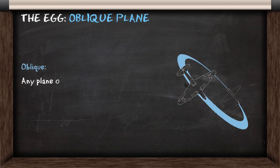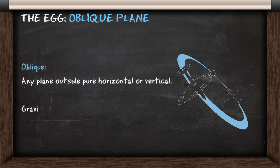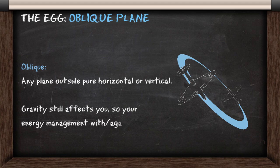The last plane in motion is the oblique plane. This is any plane outside the pure horizontal or vertical. Gravity still affects you in this plane, so your energy management with or against gravity dictates your turn performance.